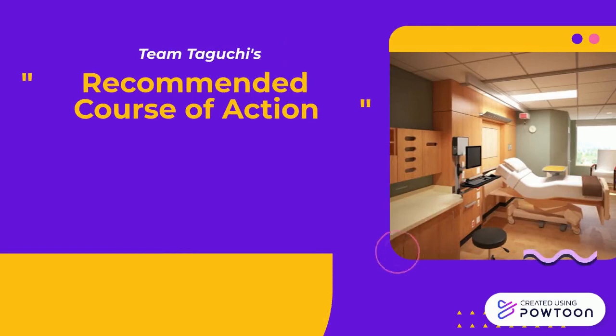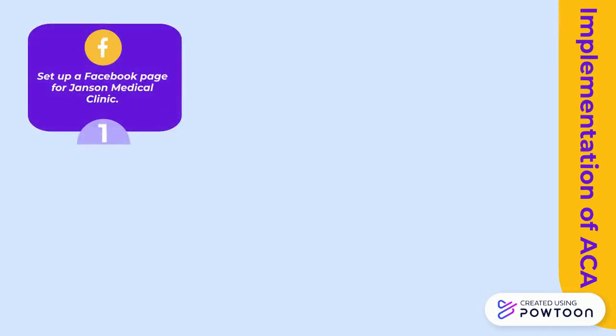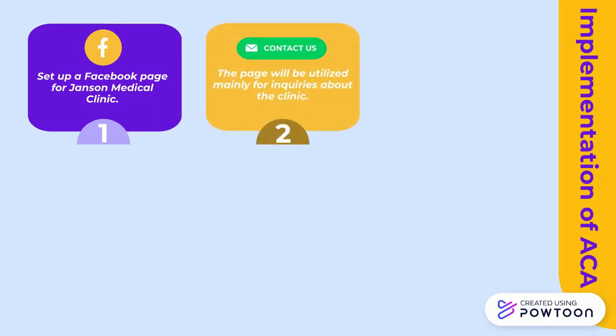A recommendation which is none other than ACA-1 in its implementation process. First is to set up a Facebook page for Janssen Medical Clinic and keep it updated by posting relevant information on the page whenever necessary. The page will indicate the operating hours, location details, contact details, and the link for the registration supported by Google Form. The Facebook page will be utilized mainly for inquiries about the clinic, which will free up the two available landline phones to accommodate other more significant phone calls.